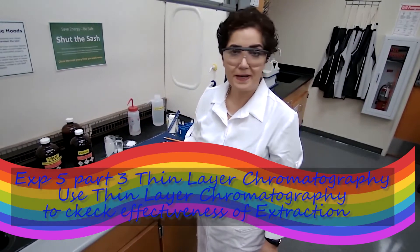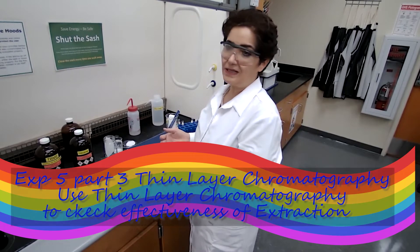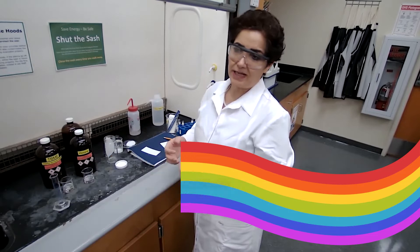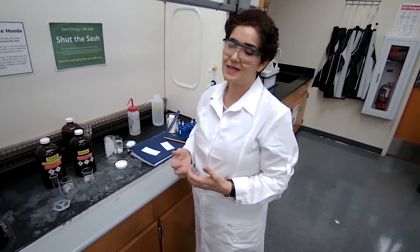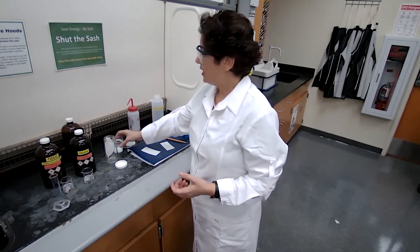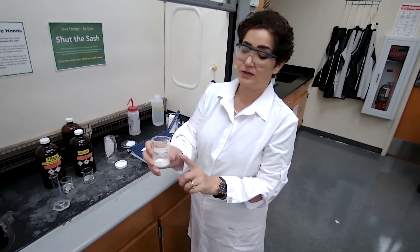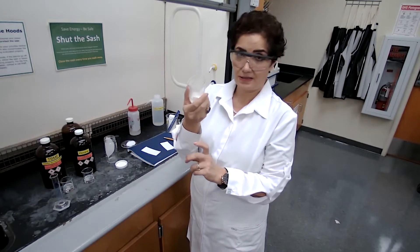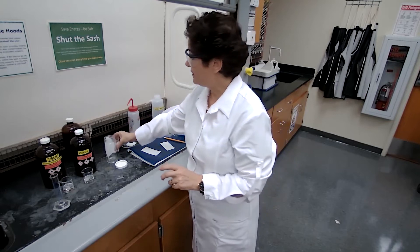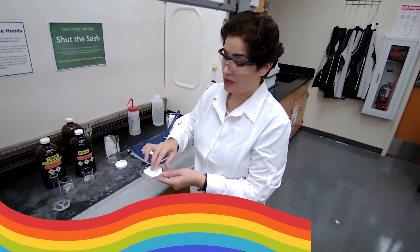For part three of this experiment for chromatography, we are going to use TLC to check the efficiency of the separation technique we used last class, and that was extraction. After the extraction, I told you to save your sample, which we have the neutral product inside a beaker and the acid, the organic acid on the watch glass.